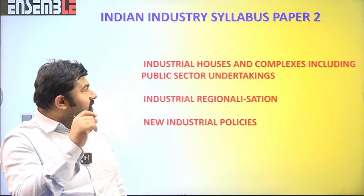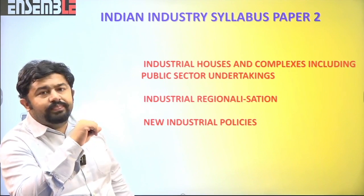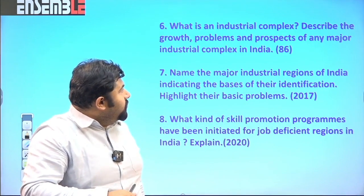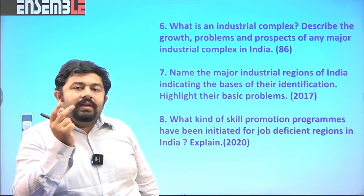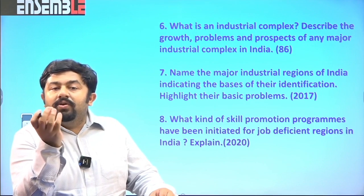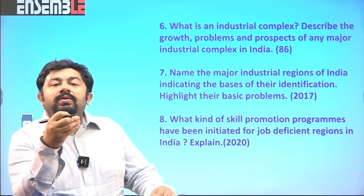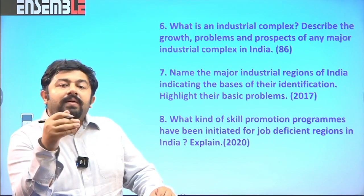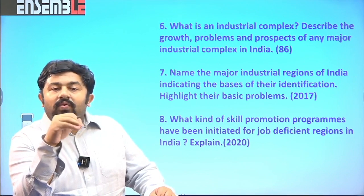The next topic covers industrial houses and complexes, including public sector undertakings, industrial regionalization, and new industrial policies. An industrial complex is a region where there is agglomeration of industries. Agglomeration is beneficial because the unit cost of production decreases — costs of infrastructure, capital, insurance and labor get distributed among many industries. There are also forward and backward linkages that benefit industries in a complex.